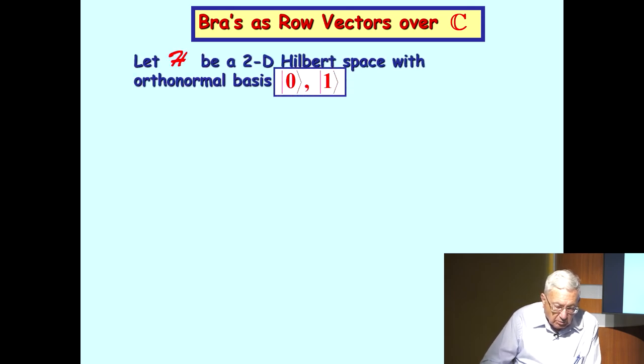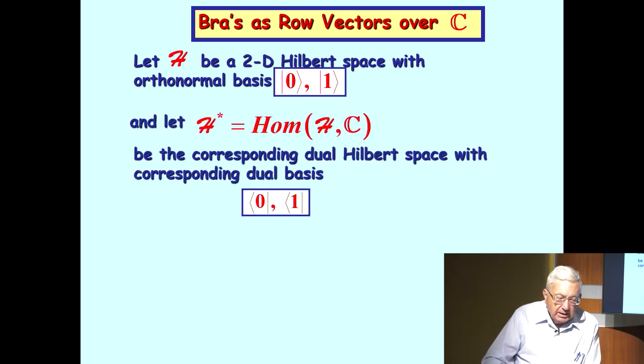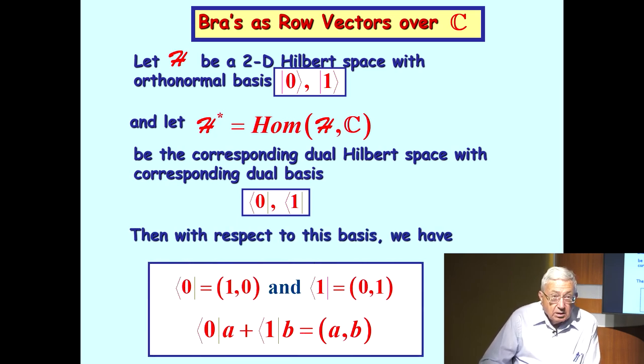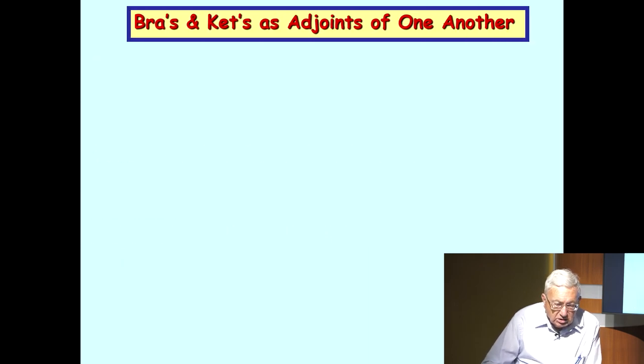We can think of bras, we can represent these linear transformations as row vectors over the complex numbers. Let H be a two-dimensional Hilbert space with orthonormal basis ket zero and ket one. And let H star be our Hilbert space of bras, of linear transformations from H into the complex numbers. And we, as before, use the same delimiters as before to get bra zero and bra one. We can think of bra zero as a row vector one, zero, and bra one as a row vector zero, one. And in this way, we can write the bra, which consists of bra zero times a plus bra one times b, as simply a row vector of complex numbers a, b.